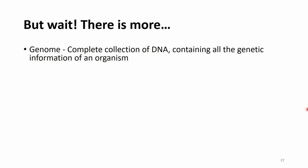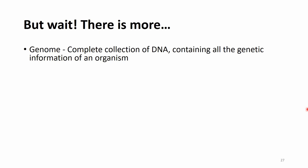Now we arrive at what I'd like to call 'but wait, there is more.' This is about consideration of various aspects that could be researched with so-called omics studies. For us right now, the most important part is the genome — the complete collection of DNA containing all genetic information of an organism. If we want to study the genome, we use genomics.